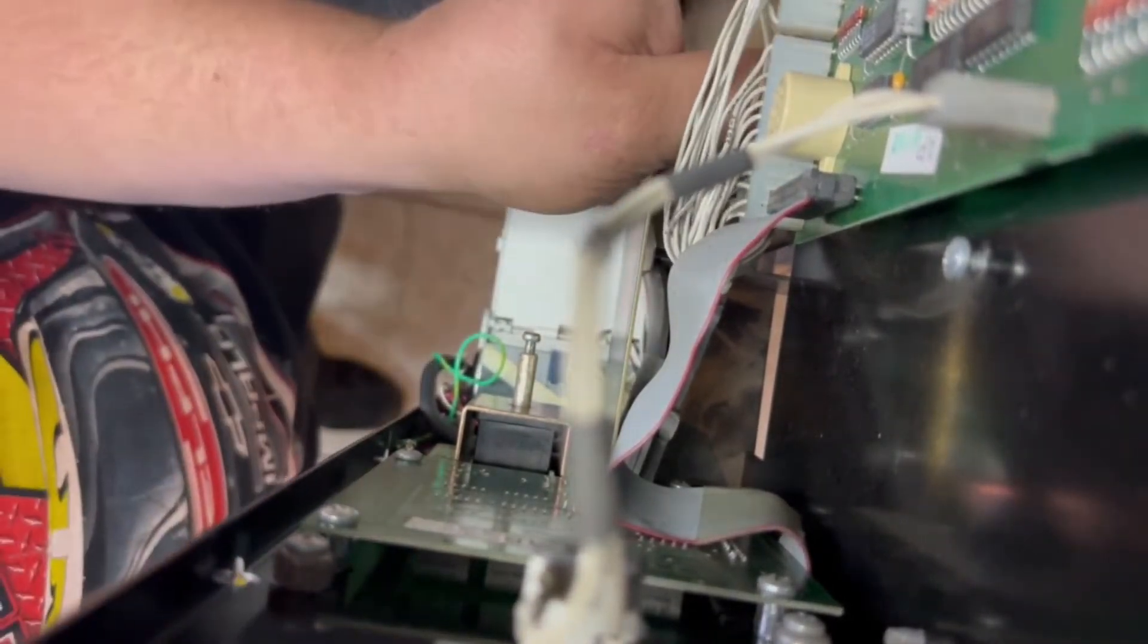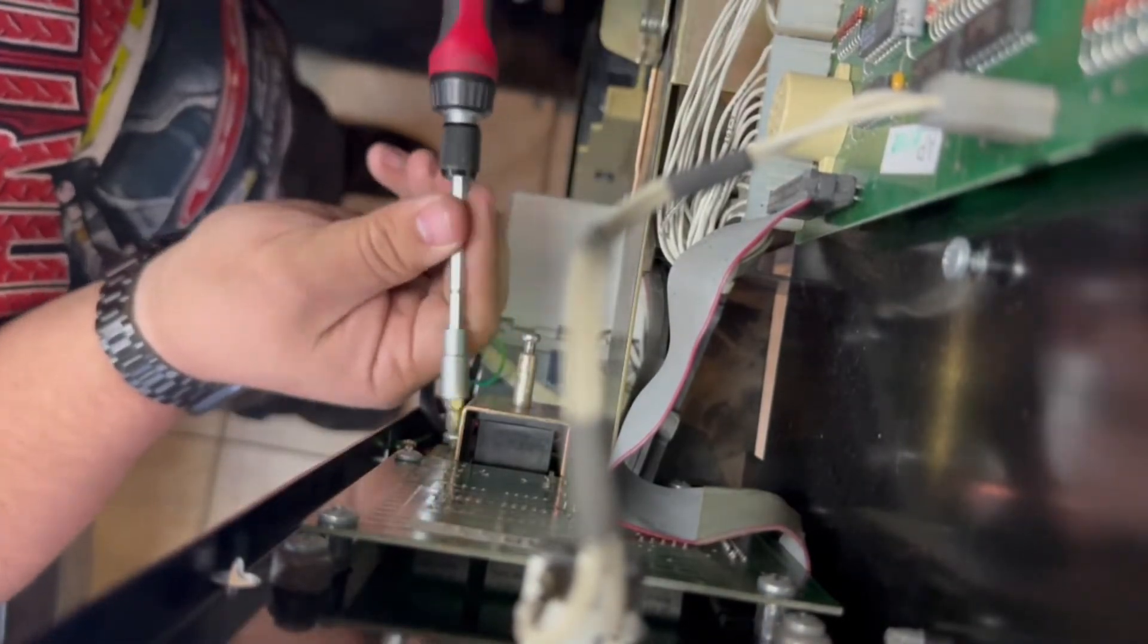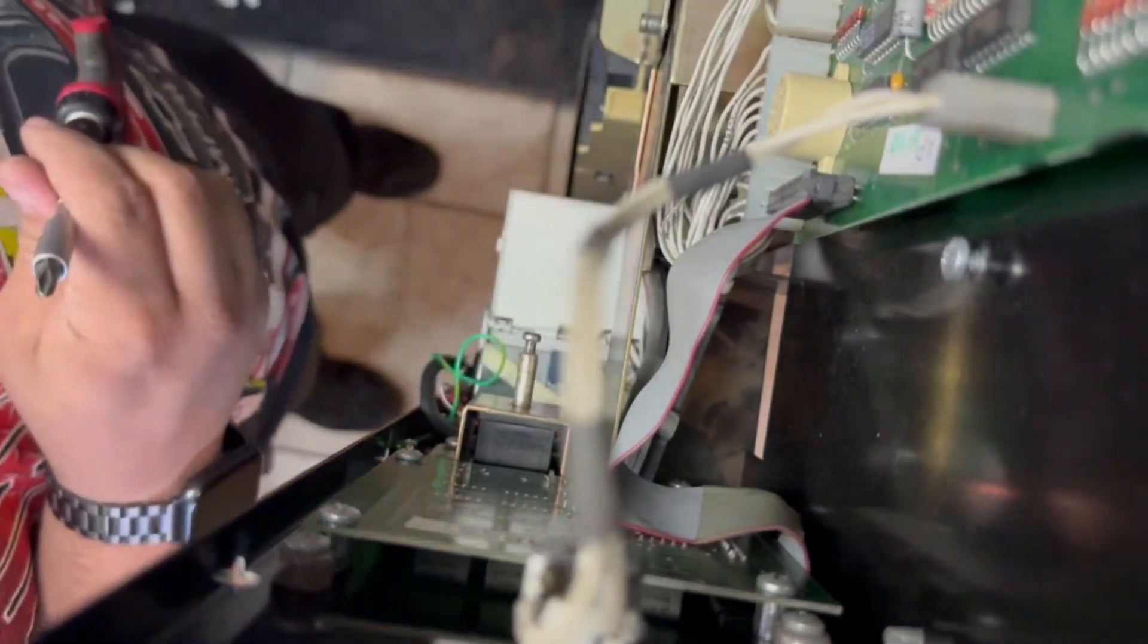Getting all the screws locked back in. Then I'll get that crossbar back in that connects the coin return button to the lever.